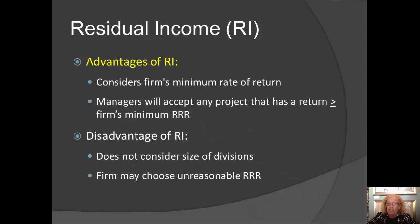There are several strong advantages to using residual income to evaluate division managers. It takes into account the firm's minimum rate of return and only gives a positive value if the project or division jumps that hurdle — generating more income than the minimum the firm requires. Because of that, managers will accept any project that meets at least the required rate of return and reject any project that doesn't jump the hurdle.